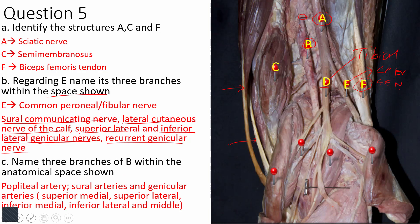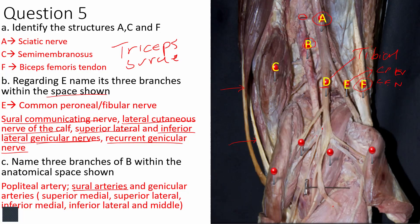The popliteal artery has two groups of branches: muscular branches and genicular branches. The muscular branches are the sural arteries — usually two — which supply the triceps surae muscle group. Triceps surae includes the two heads of gastrocnemius and soleus. You can see the medial sural artery and the lateral sural artery branching from the popliteal artery, going to the medial and lateral heads of gastrocnemius respectively.